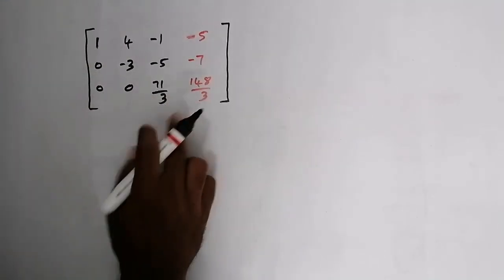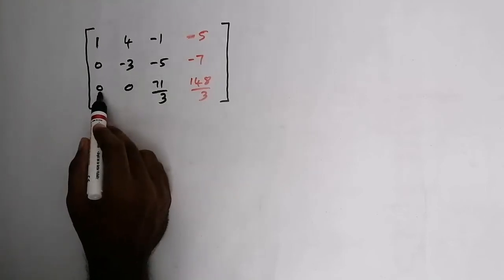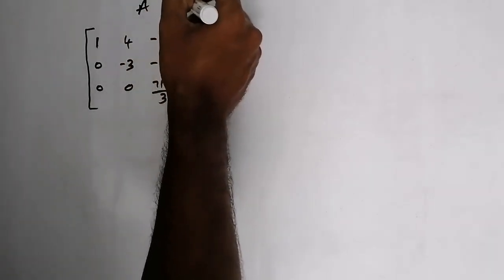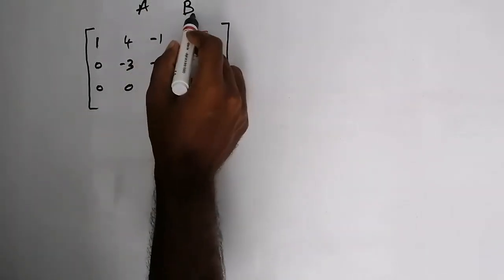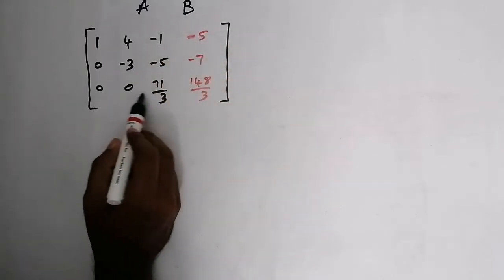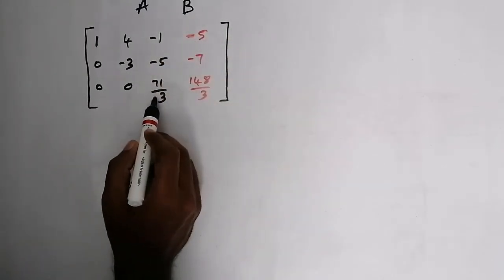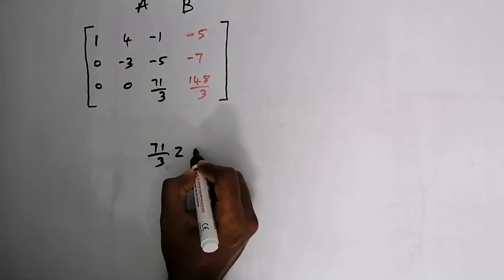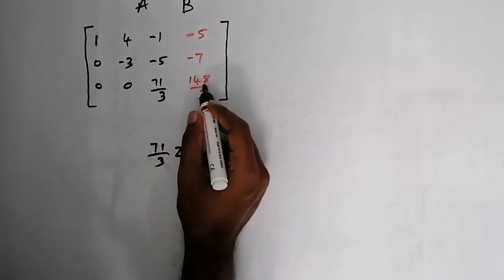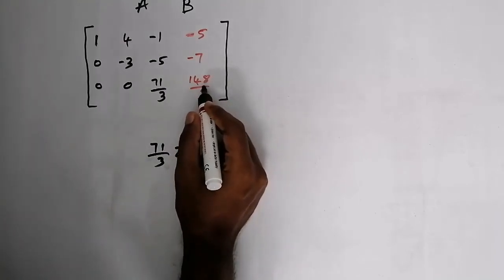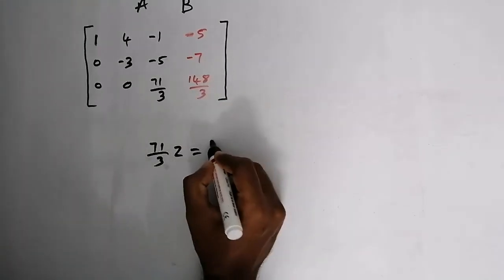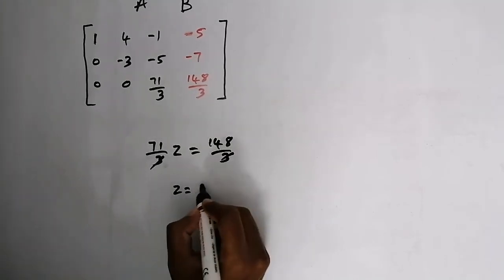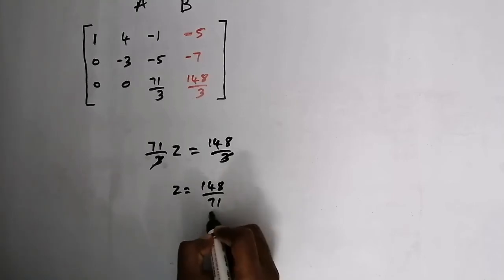In the third equation, x and y coefficients are zero, so only the coefficient of z remains. We have (71/3)z equals 148/3. From this equation, we get the value of z equal to 148/71.